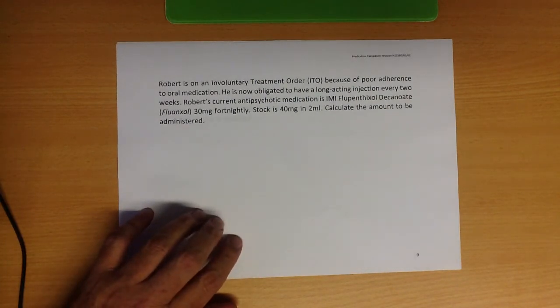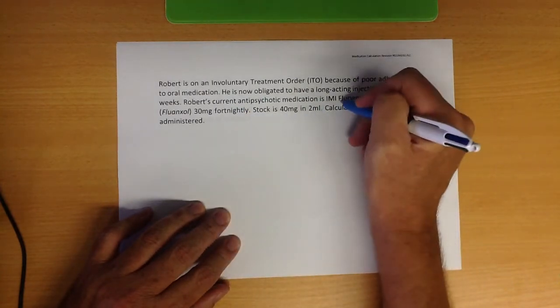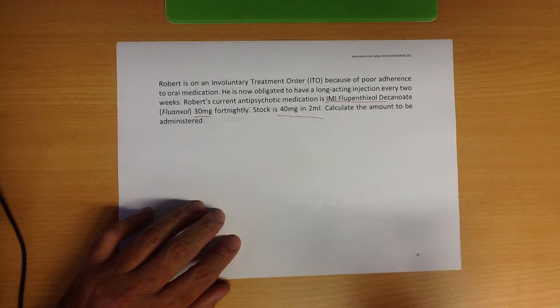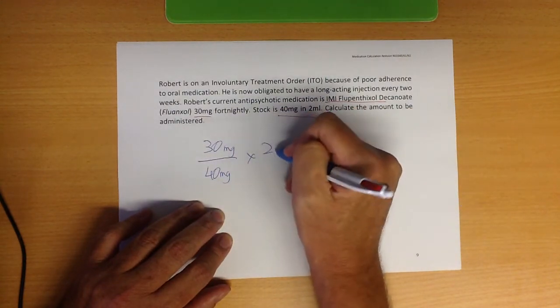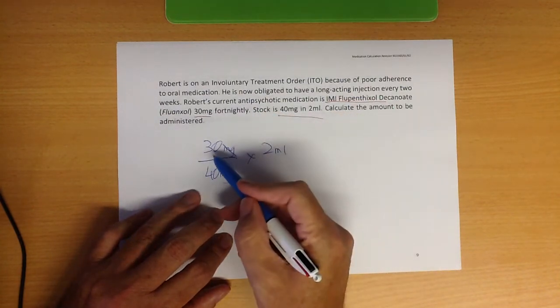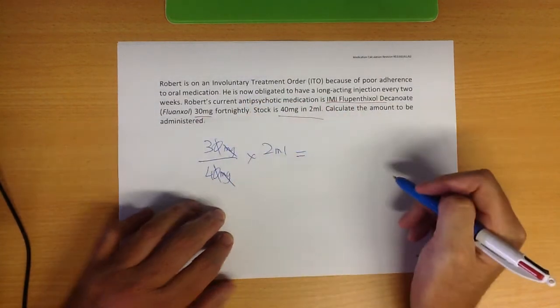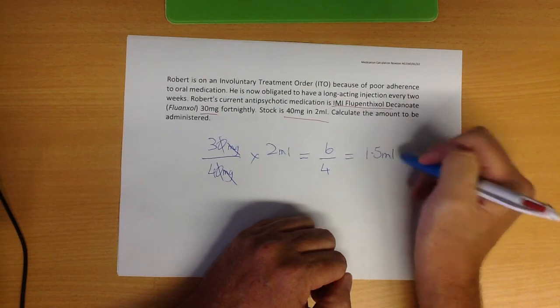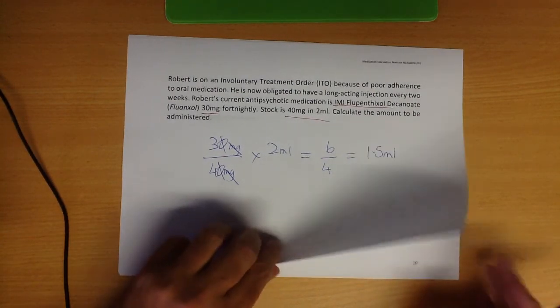Robert is on an involuntary treatment order, ITO, because of poor adherence to oral medication. He's now obligated under the ITO to have a long-acting injection every two weeks. Robert's current antipsychotic medication is IM flupenthixol 30 milligrams every fortnight, and in stock is 40 milligrams by 2 mils. So back with that old formula that we used before, it's what we want over what we've got times the volume. Get rid of the milligrams there, then we can get rid of the zeros too. Then we go 3 by 2 is 6 over 4, which equals 1.5 milliliters. You can use a calculator if you're not confident of course. Hopefully that makes sense.